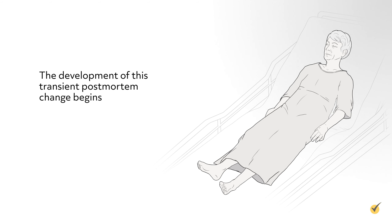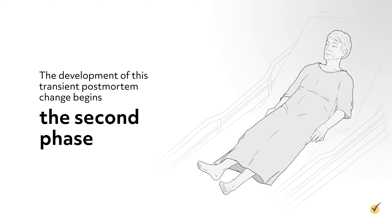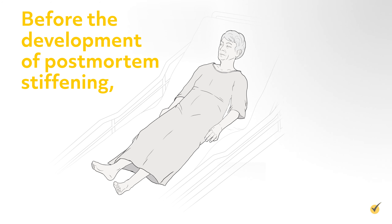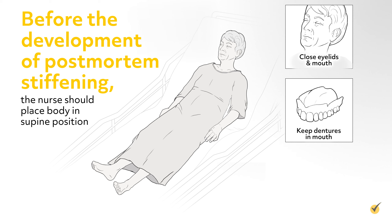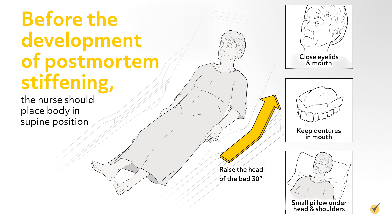Before the development of postmortem stiffening, the nurse should place the body in a supine position with proper alignment of the arms and legs, close the eyelids and mouth. If dentures are in place, they should not be removed; if not, an attempt should be made to insert them. Maintaining proper alignment, raise the head of the bed 30 degrees. To prevent blood from settling in the face, a small pillow may be placed under the head and shoulders, with care to maintain proper head and neck alignment.